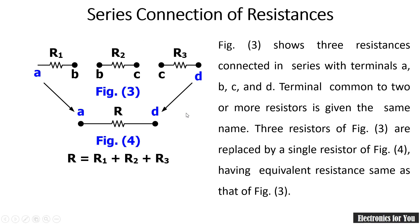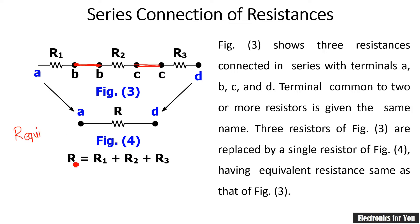In a series connection of resistances, if the resistances are connected one after another, such a combination is known as a series combination. In this case, three resistances R1, R2, and R3 are all connected one after the other. In a series connection, the equivalent resistance is the sum of all the resistances, so R_equivalent equals R1 plus R2 plus R3. You can denote it as R_eq or R_series.